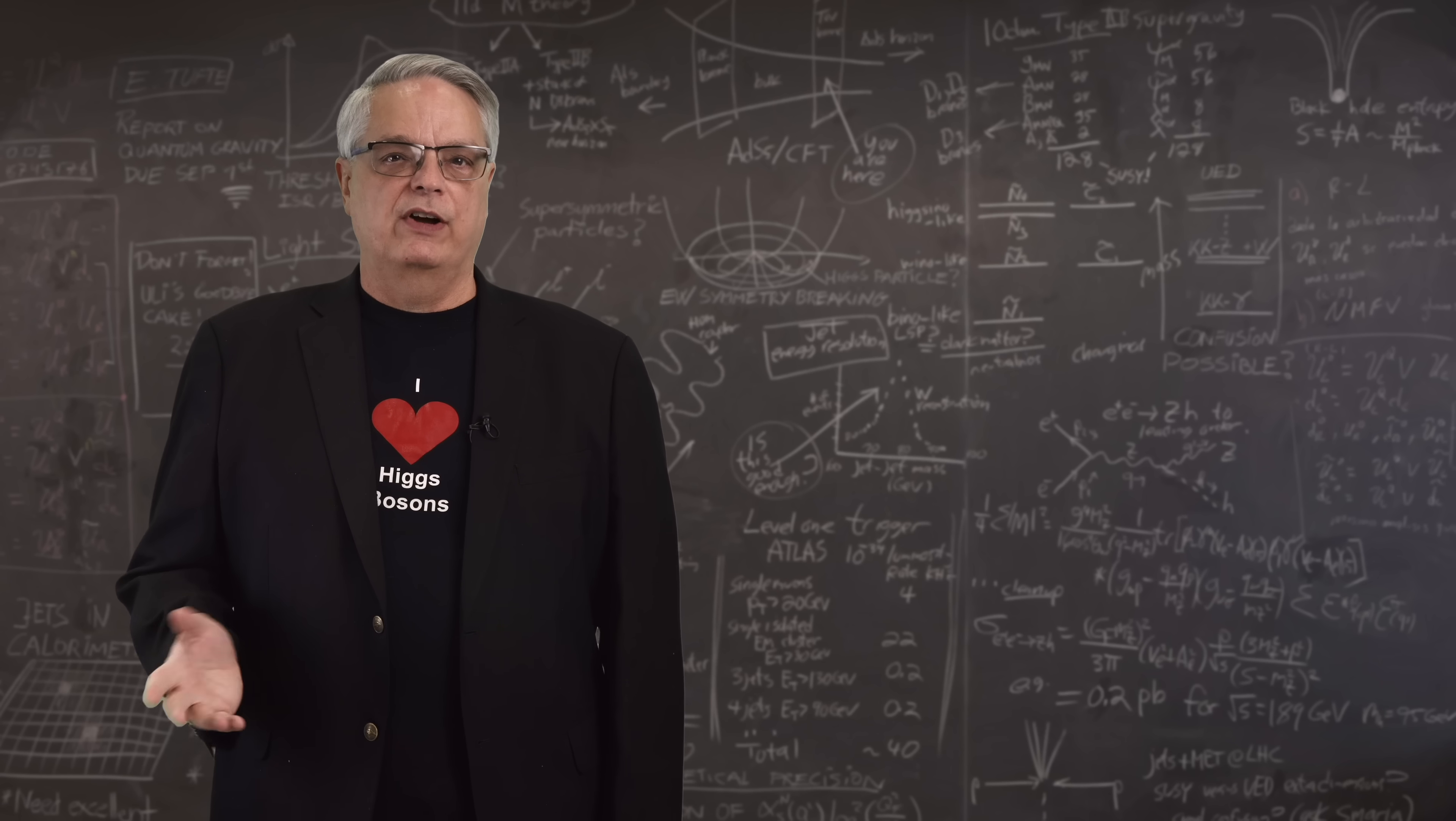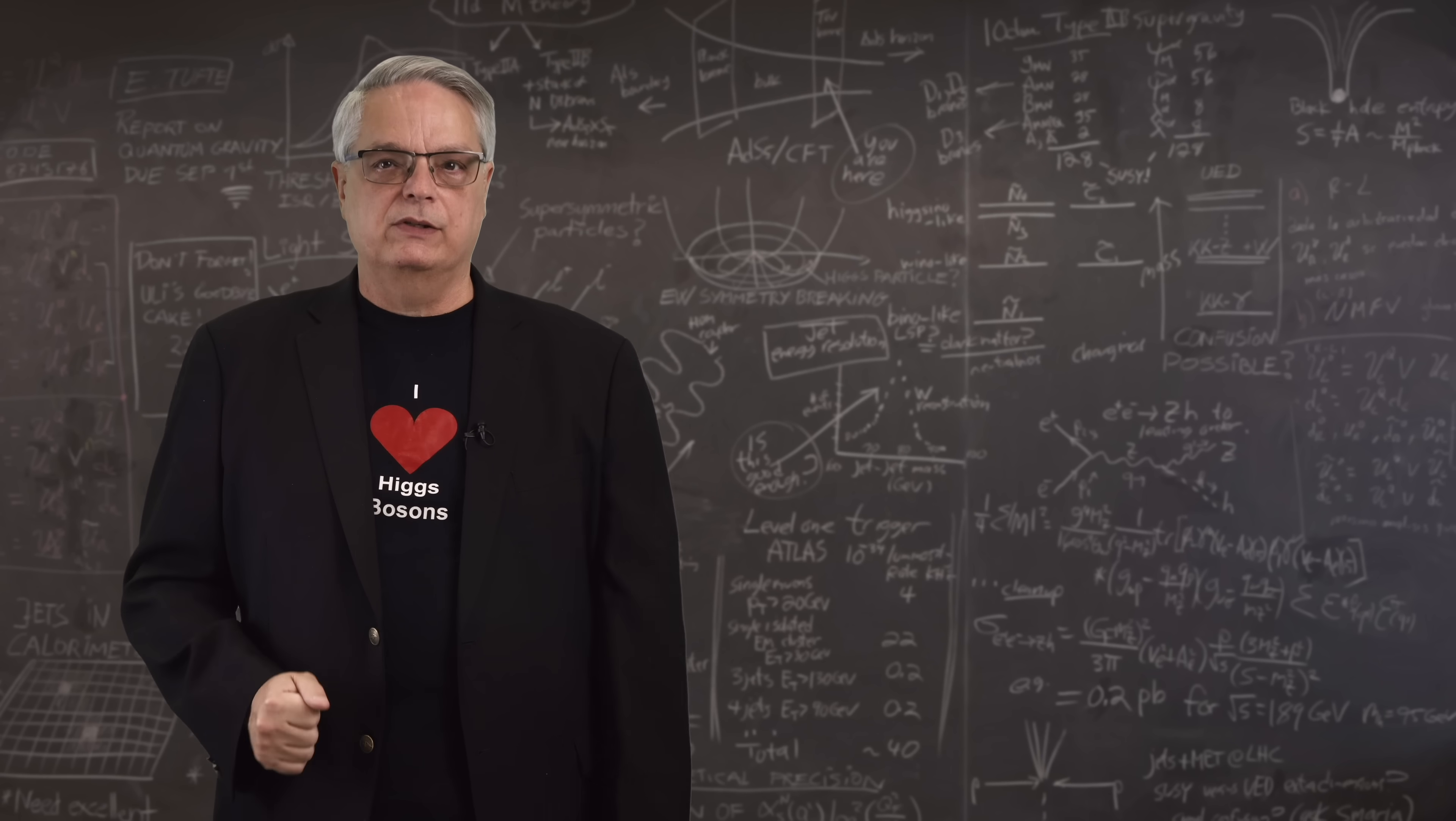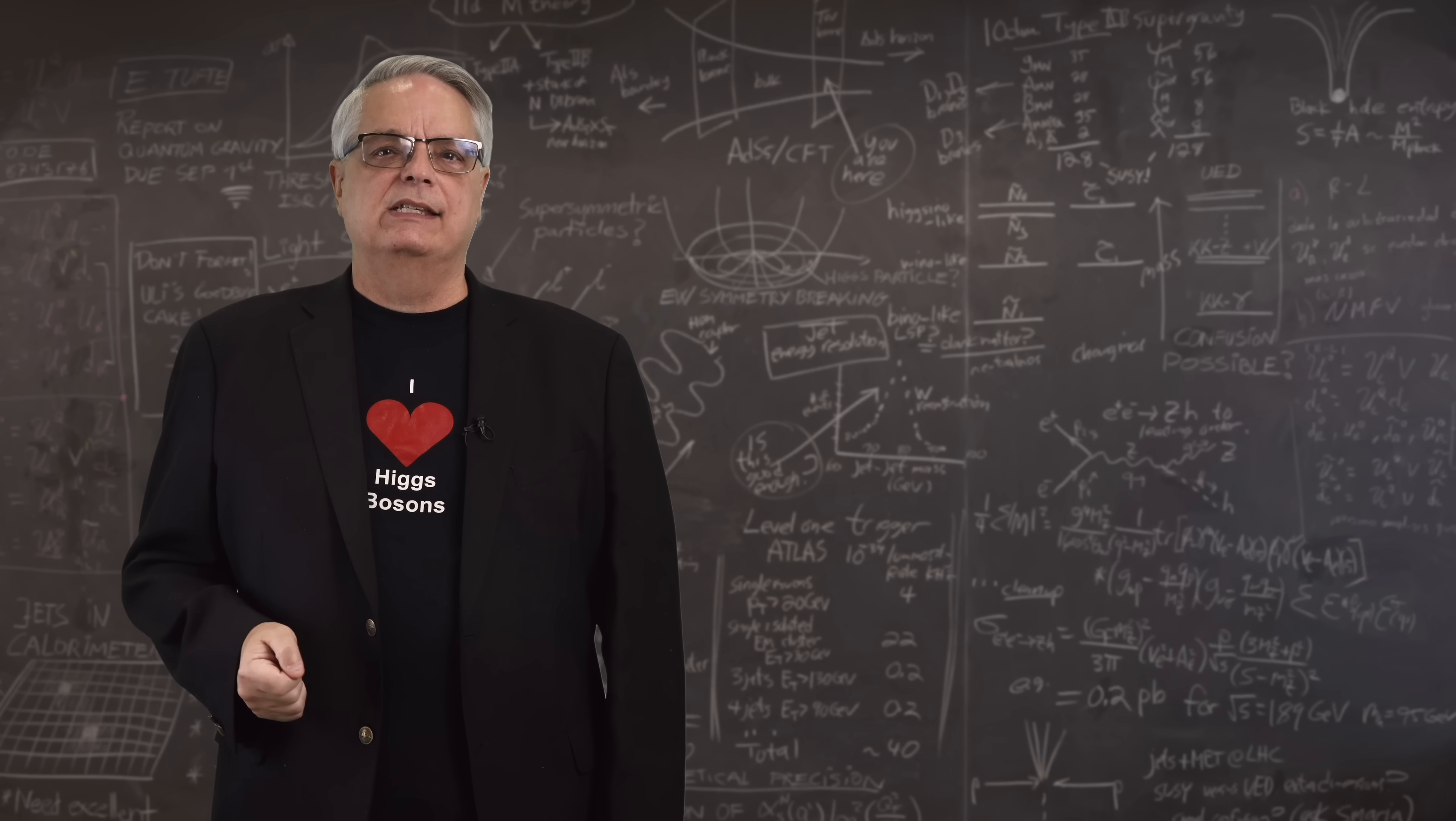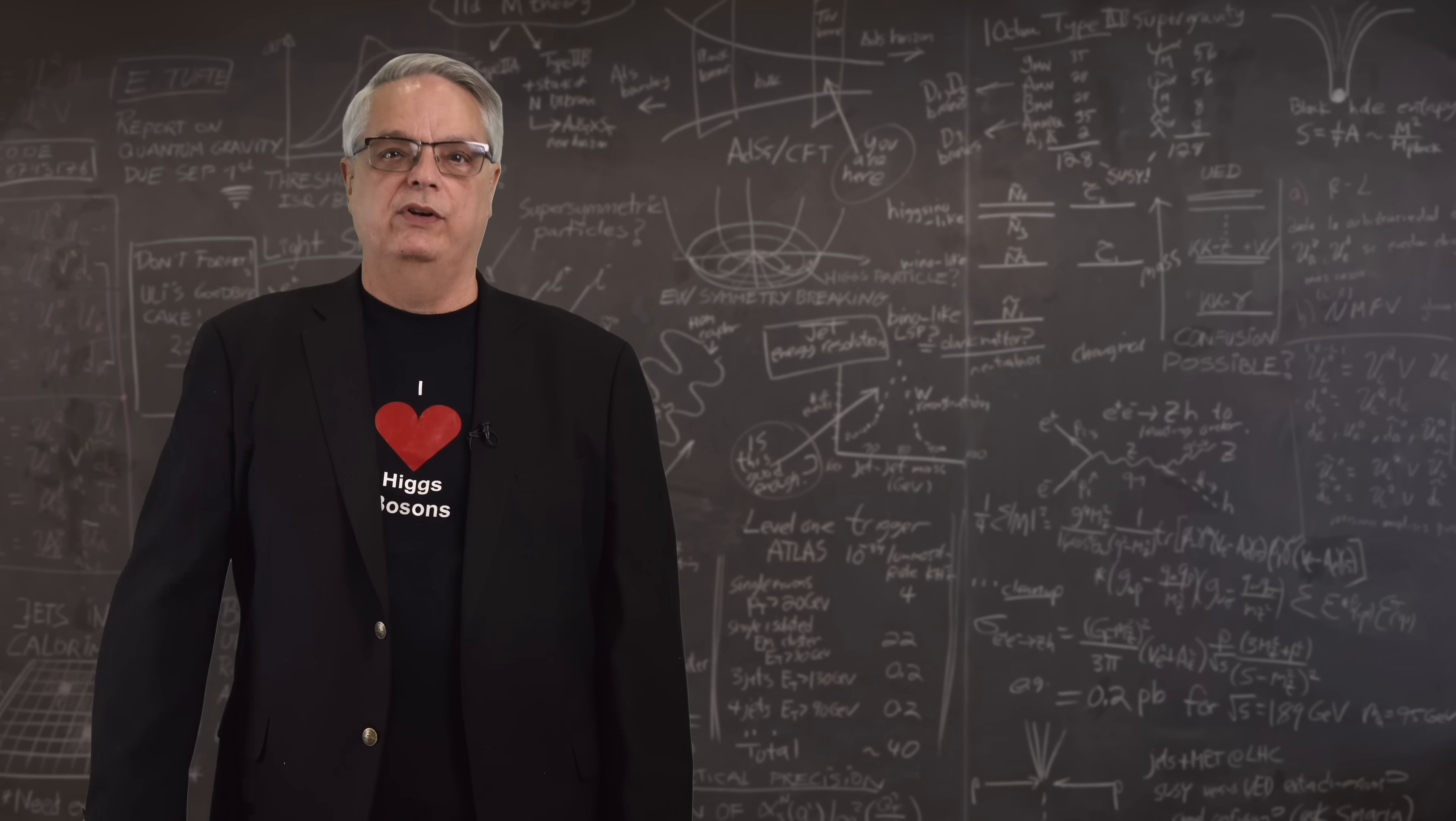The Higgs boson is a vibration of a thing called the Higgs field. The Higgs field gives mass to fundamental subatomic particles like electrons and the quarks found inside protons and neutrons. We can't see the Higgs field itself, but we can know it exists by seeing vibrations of the field.